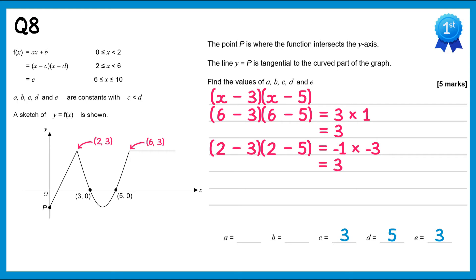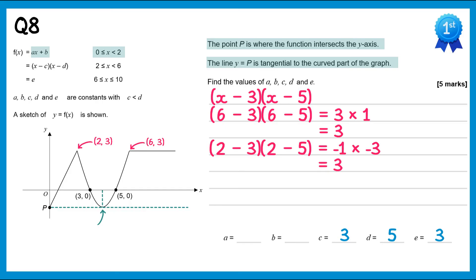Now we need to find a and b from the first section ax plus b for x from 0 to 2. The point p is where the function intersects the y-axis, and y equals p is tangential to the curved part, meaning it touches the vertex of the quadratic. The vertex has x-coordinate halfway between roots 3 and 5, which is 4. Substituting x=4 into (x-3)(x-5) gives (1)(-1) equals -1, so the vertex is (4, -1) and p has coordinates (0, -1).